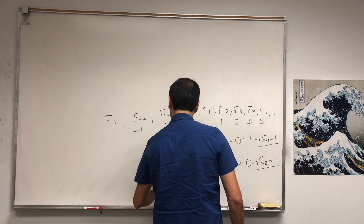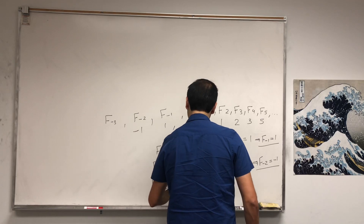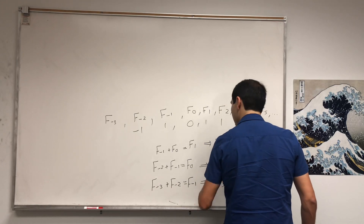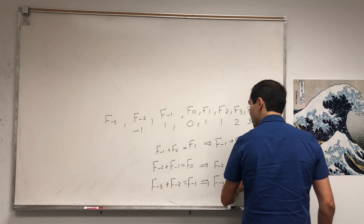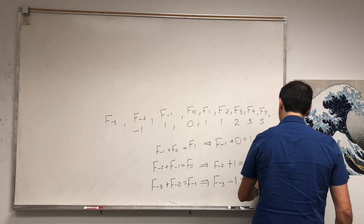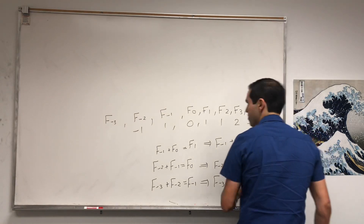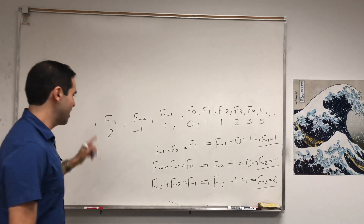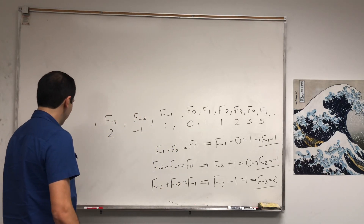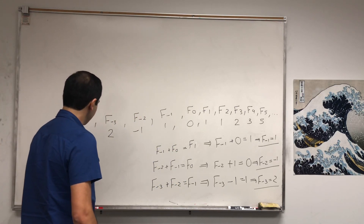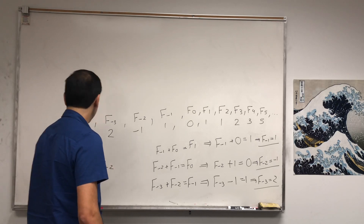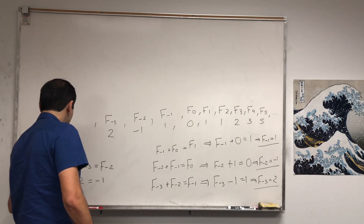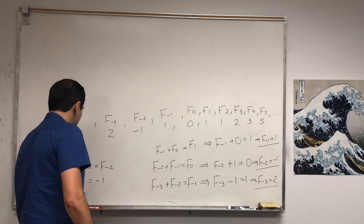So F of negative 3 plus F of negative 2 equals F of negative 1. So F of negative 3 minus negative 1 equals 1, meaning F of negative 3 is 2. Let's do one more: F of negative 4 plus F of negative 3 equals F of negative 2. So F of negative 4 plus 2 is minus 1, meaning F of negative 4 is minus 3.